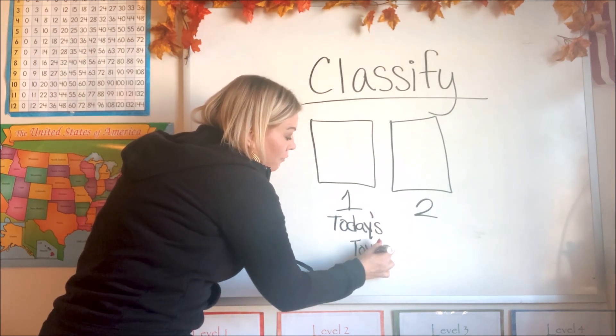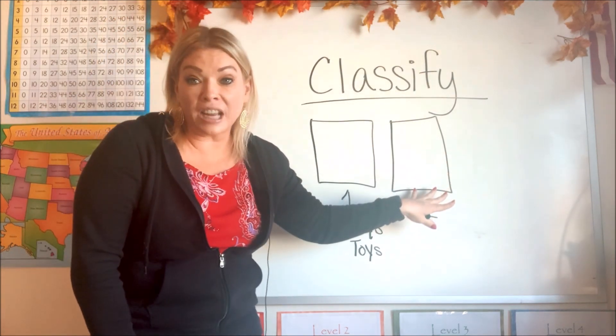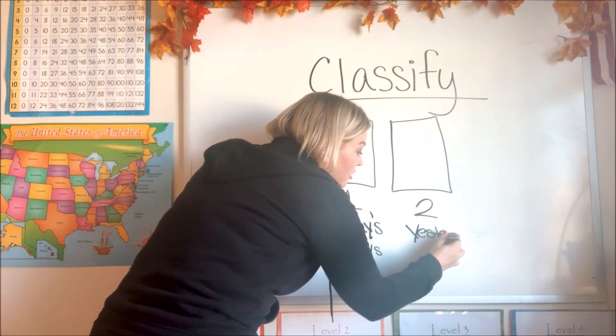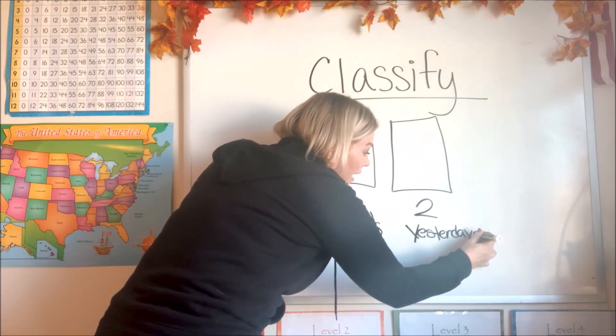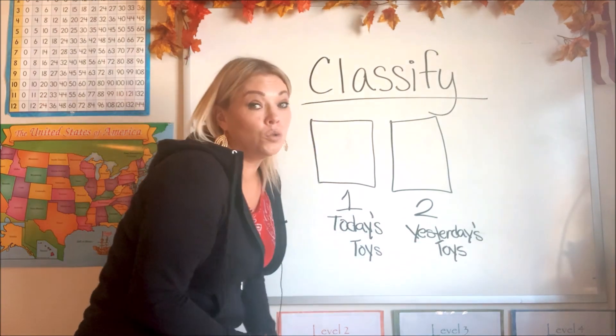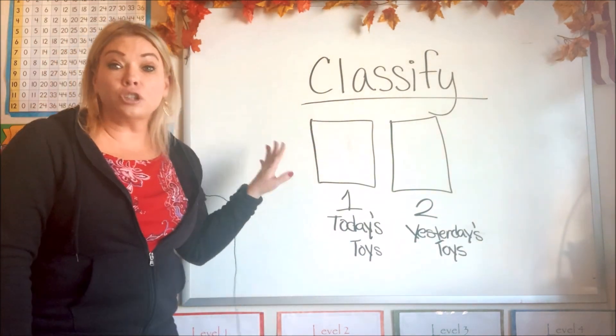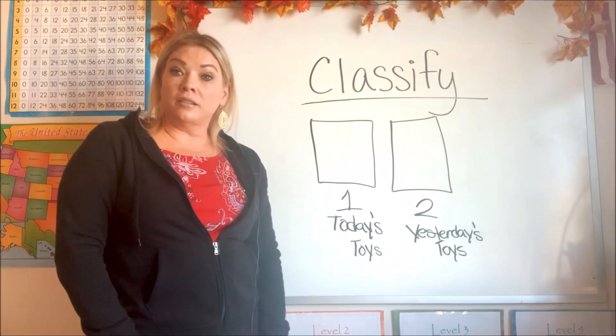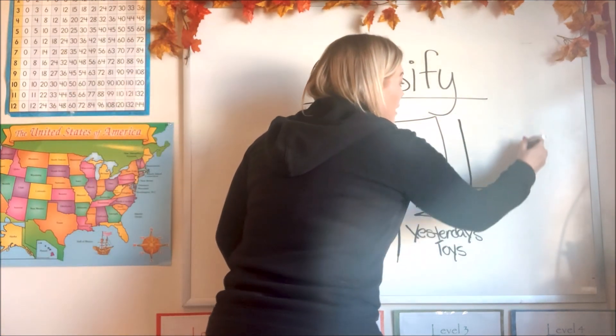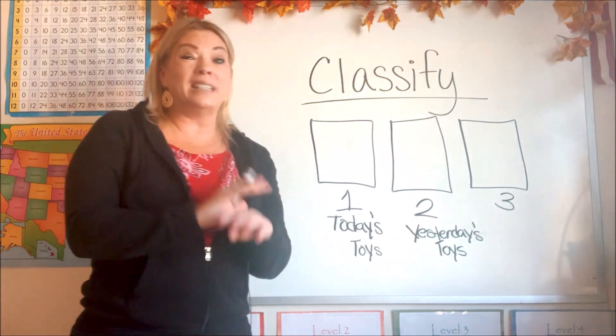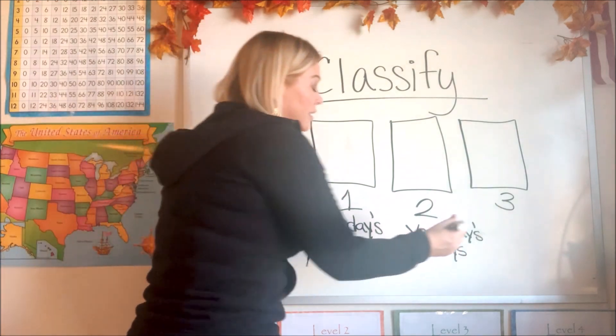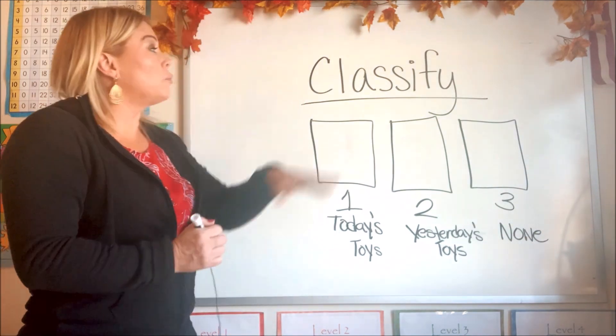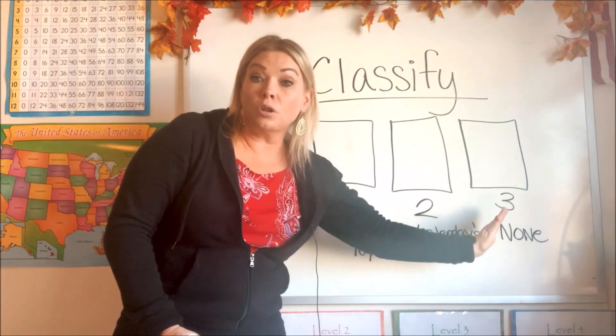Now let's say your mom said to put everything that you played with yesterday in group two. So you're going to classify group two as yesterday's toys. See how we just did that? We made two groups and we're going to classify our toys into each group. Did we play with it today or did we play with it yesterday? And we could even make a third group if we want. And maybe our third group would be toys that we didn't play with today or yesterday. So I'm going to put none. So now we have three groups and we're going to classify all of your toys into three groups.